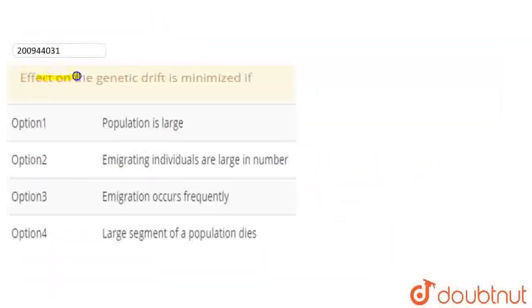The question is: effect on genetic drift is minimized if population is large, emigrating individuals are large in number, emigration occurs frequently, or large segments of a population dies.